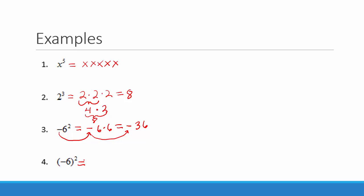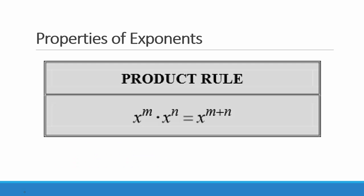Our next problem is different. Here, negative 6 is in parentheses and the square is on the outside of the parentheses. This means to multiply negative 6 times itself: negative 6 times negative 6. Negative 6 times negative 6 is positive 36, because a negative times a negative is a positive.